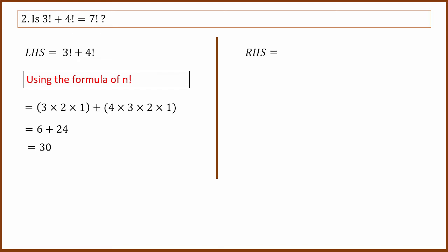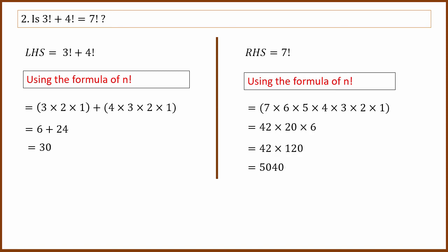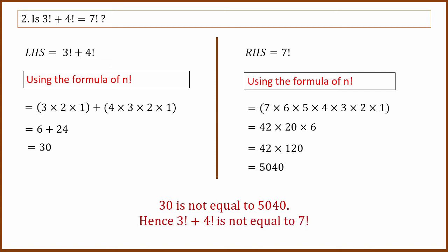Right-hand side is 7 factorial. Using the factorial formula, 7 factorial equals 5040. So left-hand side 30 is not equal to right-hand side 5040. Therefore 3 factorial plus 4 factorial is not equal to 7 factorial.